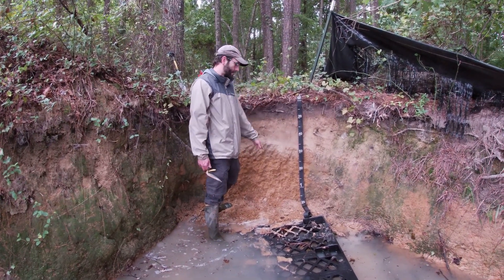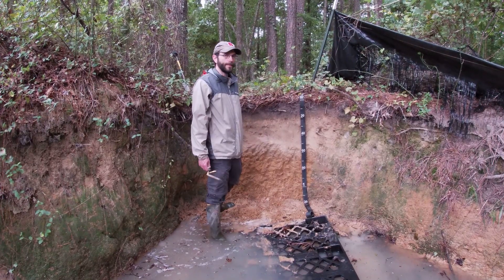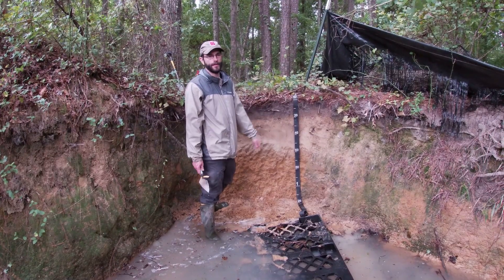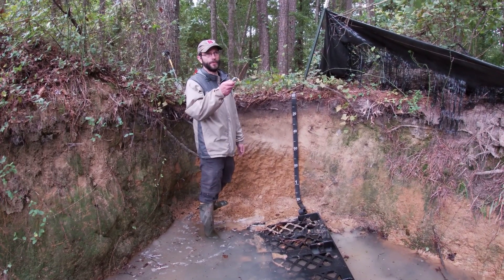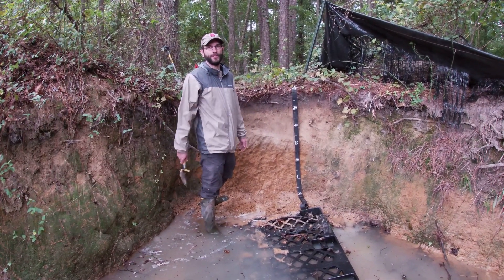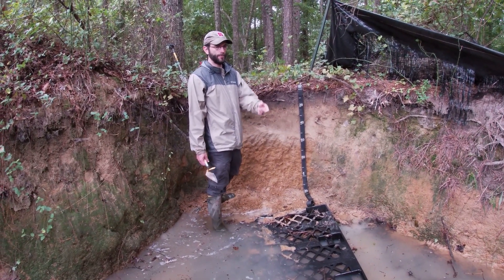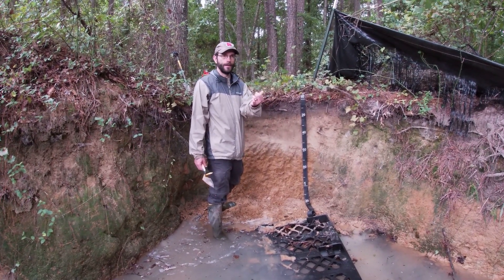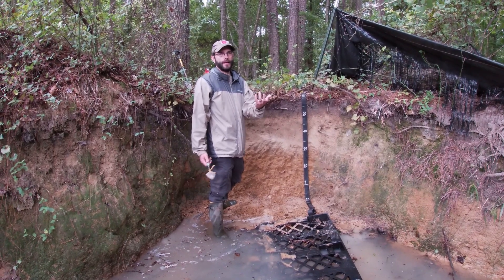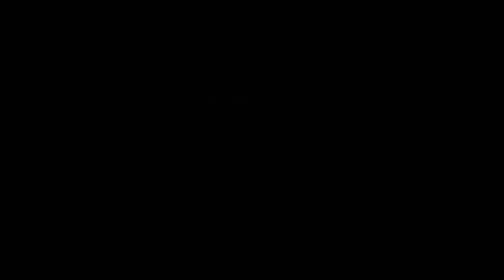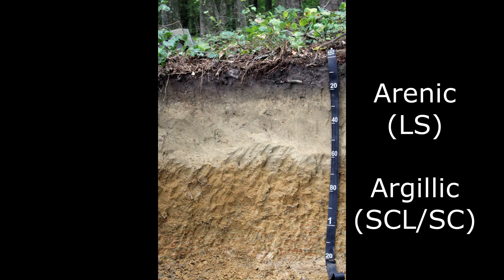This soil is not quite there yet, but it's got the morphology that eventually, given enough time, you could form something like plinthite on a landscape like this. There is plinthite mapped in the adjacent woods around here — we just don't have a pit to show it, but it's really red iron oxides that are kind of crunchy. The big thing is if you dry it out, it becomes irreversibly hardened. There are a lot of land use interpretations associated with plinthite in the coastal plain of North Carolina.